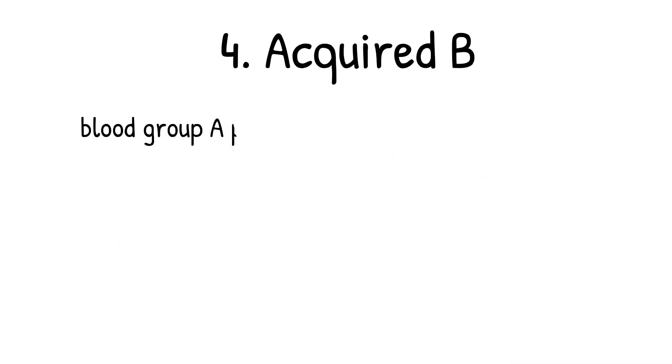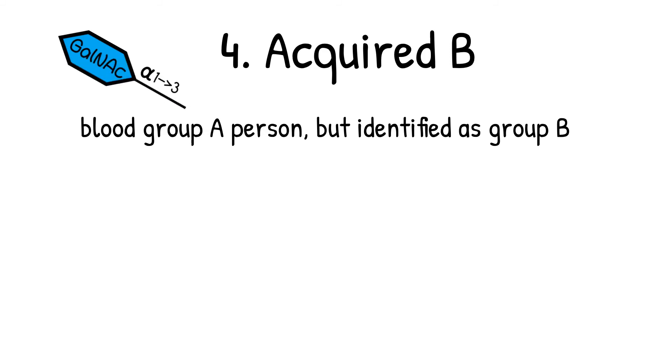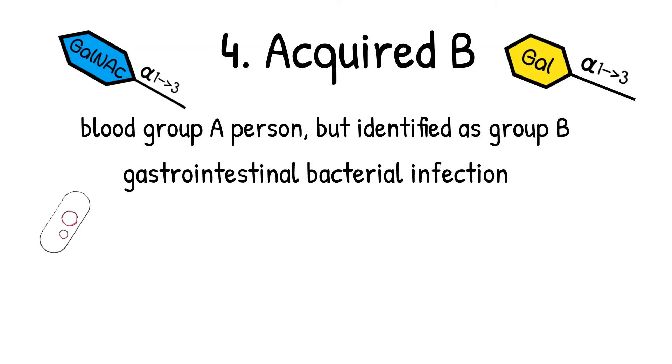Fourth, acquired B. Oh, this is a fun topic. An acquired B phenotype is when an individual is actually group A, more specifically group A1, and currently typed as B blood type. This happened in patients with gastrointestinal bacterial infections.